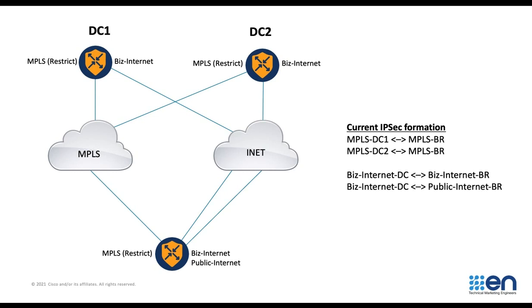In this example, we have dual data centers. We have MPLS and Internet. The branch has a single MPLS connection and dual internet. Restrict tag works just perfect for this situation — so we have a single tunnel from the branch to data center 1 using MPLS, and another tunnel from branch to data center 2.